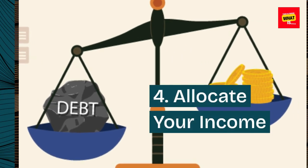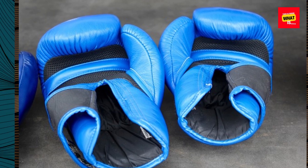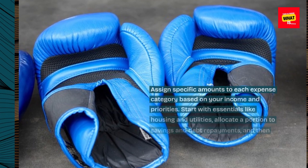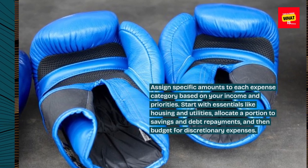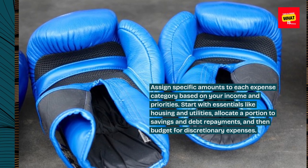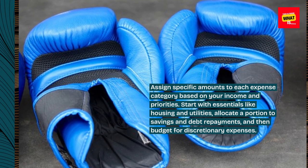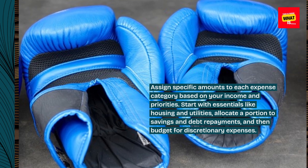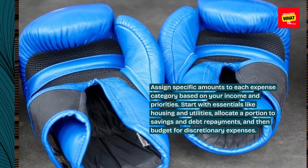4. Allocate your income. Assign specific amounts to each expense category based on your income and priorities. Start with essentials like housing and utilities, allocate a portion to savings and debt repayments, and then budget for discretionary expenses.